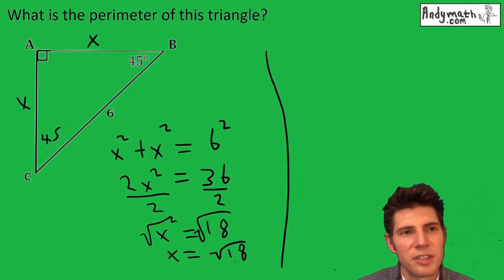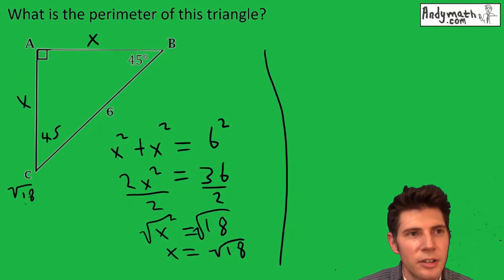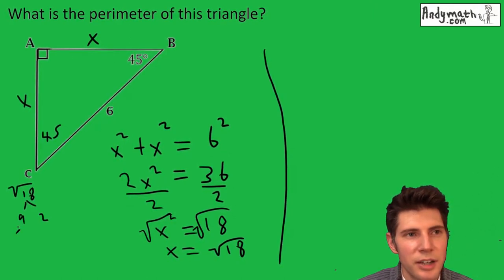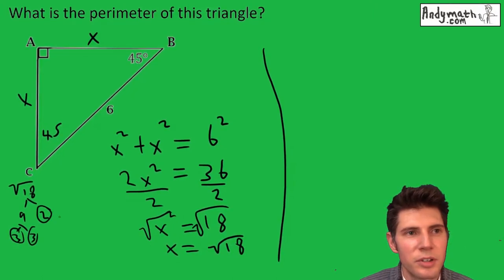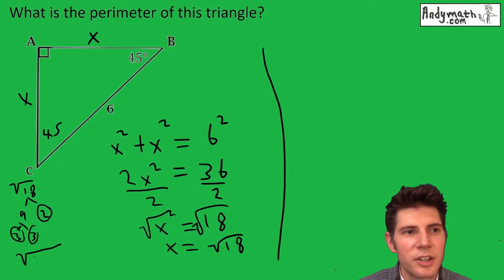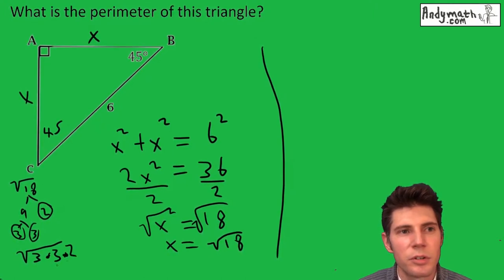Root 18 can be simplified if we make a factor tree for the 18. It gives us nine times two and three times three. Circle the primes. So root 18 is the same thing as square root of three times three times two. Since we have two threes, they can leave and go out, so it becomes three root two.